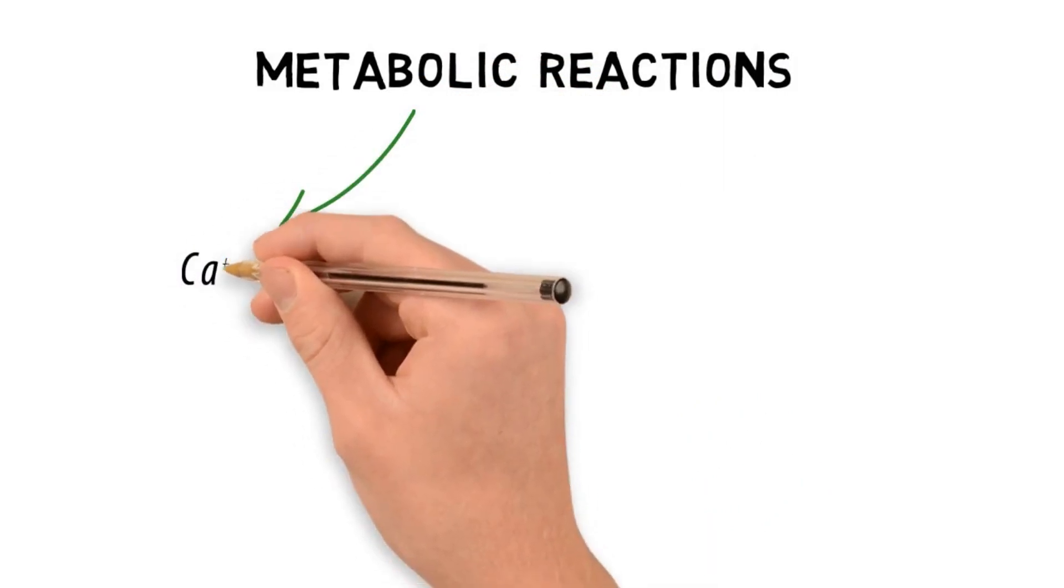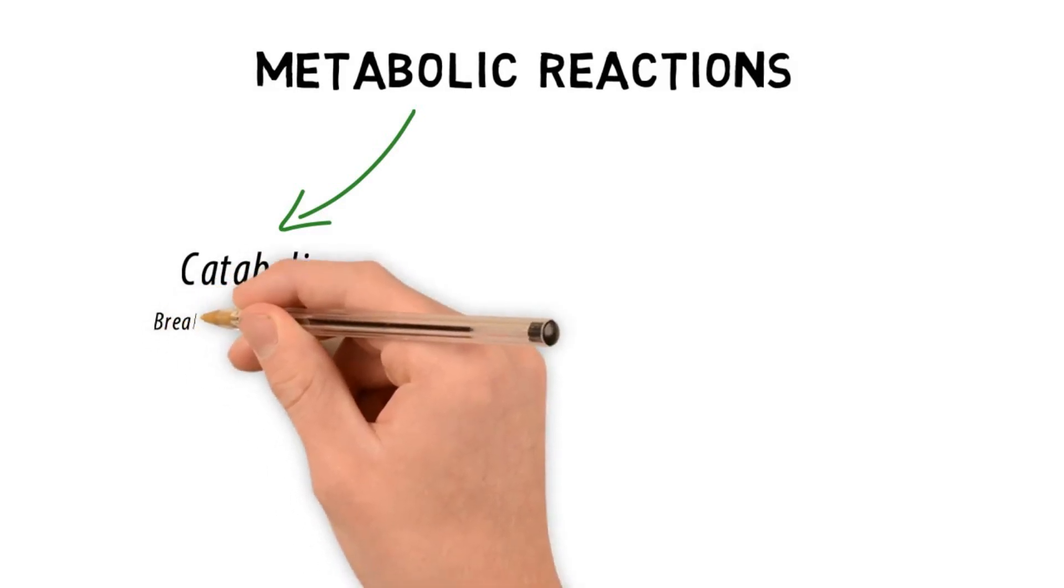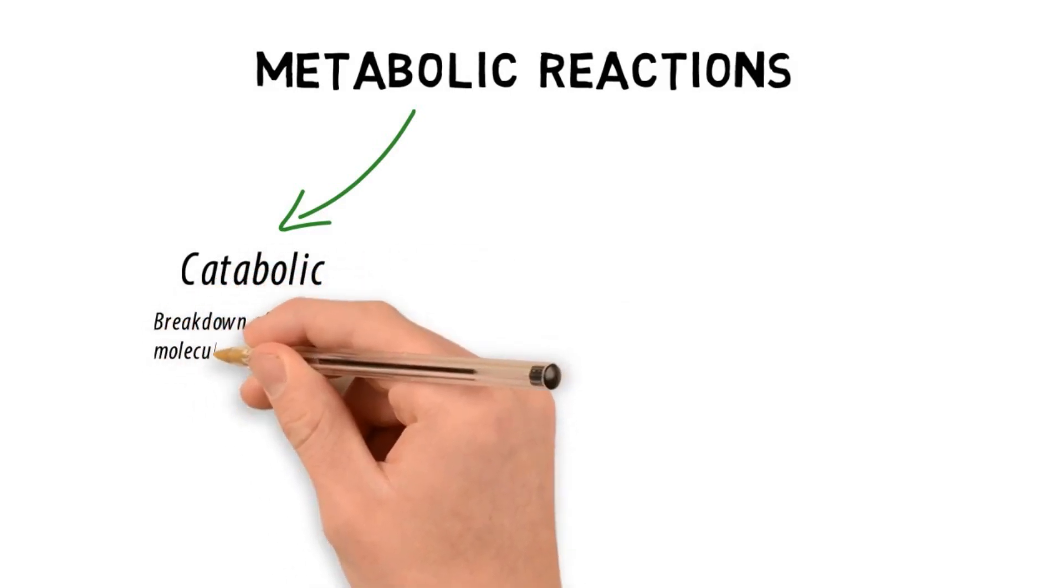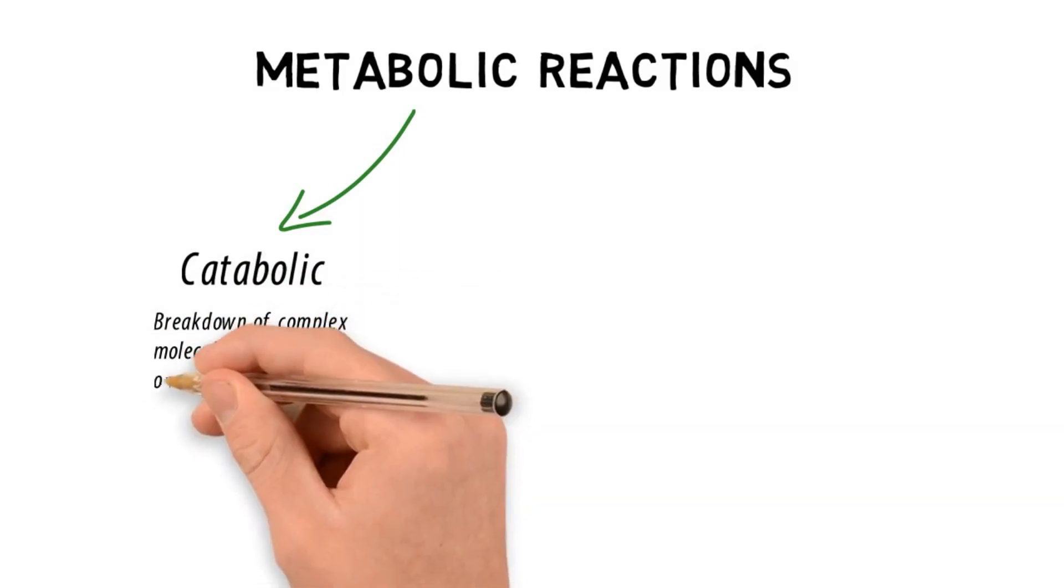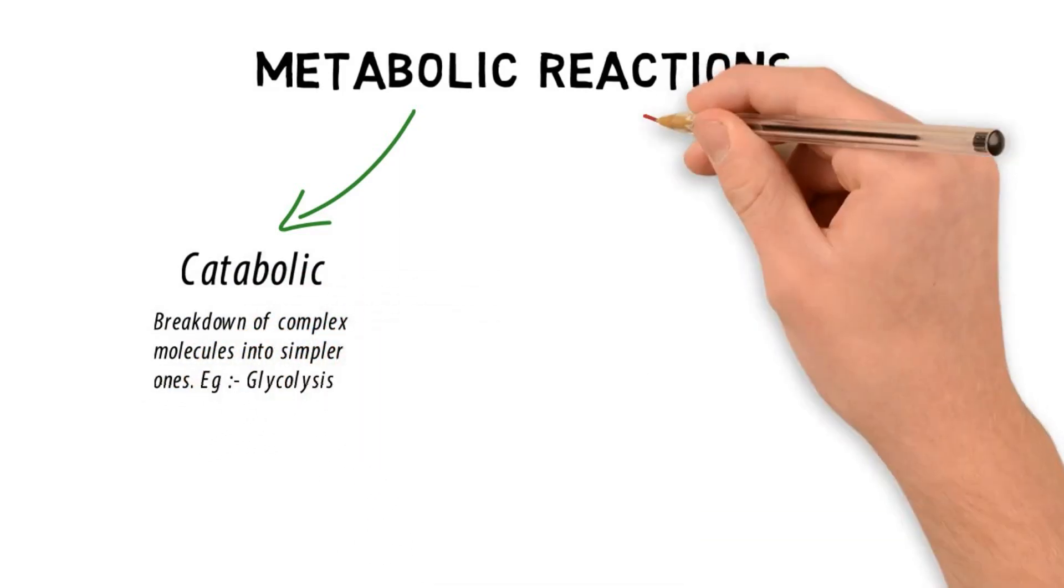Metabolic reactions can be categorized into three subtypes. Number one is catabolism or catabolic pathway, which is the breakdown of complex and larger molecules into simpler ones. Glycolysis being the example, where glucose is broken down into pyruvate.